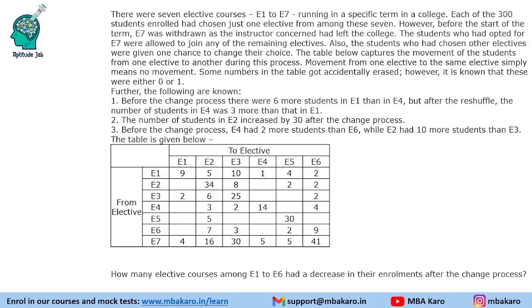Hello everyone, welcome to Aptitude Jab. This set from CAT 2017 DILR slot 2 says that there were 7 elective courses running in a specific term in a college. Each of the 300 students enrolled had chosen just one elective among these 7. However, before the start of the term, E7 was withdrawn and the instructor concerned had left the college. The students who had opted for E7 were allowed to join any of the remaining electives. Also, students who had chosen other electives were given one chance to change their choice. The table below captures the movement of students from one elective to another during this process.